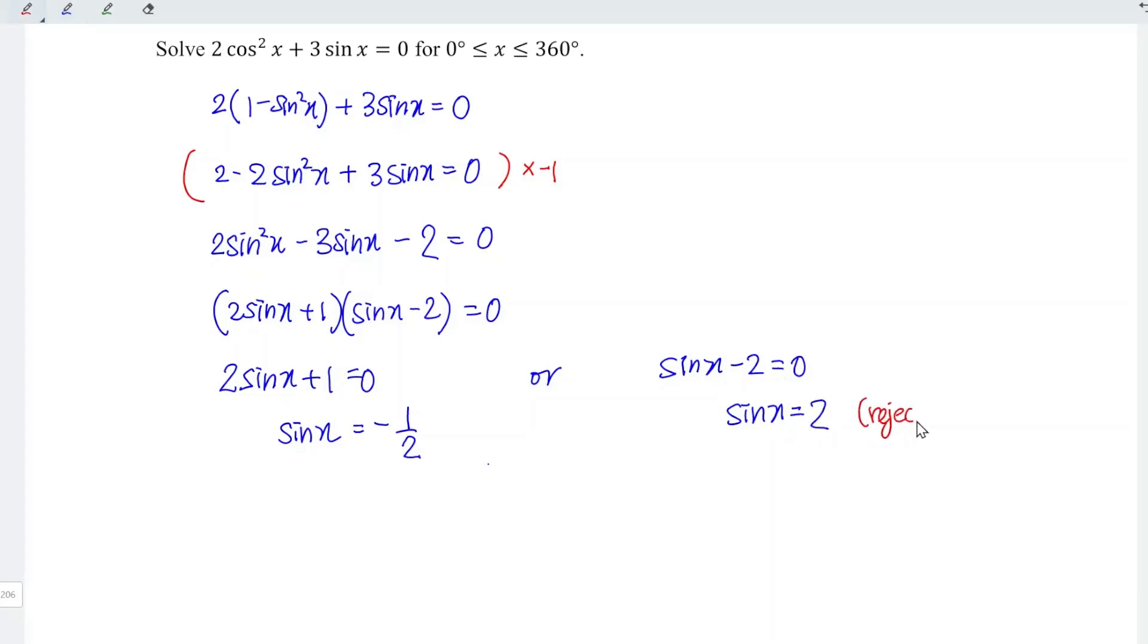The second possibility should be rejected since sine x is bounded by negative 1 to positive 1. Since this is more than 1, we should reject it.